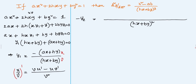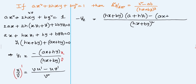Applying the quotient rule: v·u' = (hx + by) multiplied by u', where u' is the derivative of (ax + hy) = a + h·y₁. Then minus u·v', where u = ax + hy and v' is the derivative of (hx + by) = h + b·y₁.